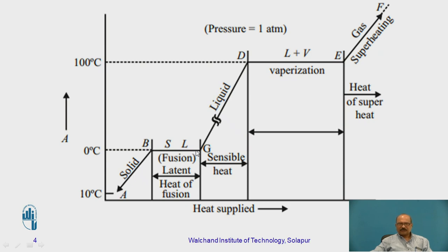From point B to C, the solid stage is converted into a partially liquid as well as partially solid phase. We call this latent heat of fusion — the word 'latent' means hidden. During this B-to-C stage, the change in temperature is not sensed by the thermometer, which is why we call it latent heat of fusion. Once 100% of the ice is converted into water, the term we use is sensible heat, because it is sensed by the thermometer. The addition of heat is continuous from the beginning up to the end.